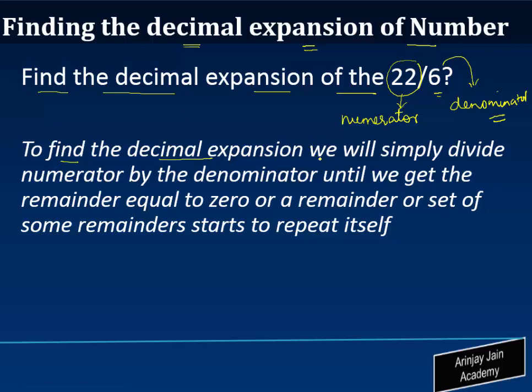In order to find the decimal expansion of any number, we will simply divide the numerator (in our example, 22) by the denominator (which is 6) until we get a remainder which is either equal to 0, or a remainder or set of remainders that repeats.